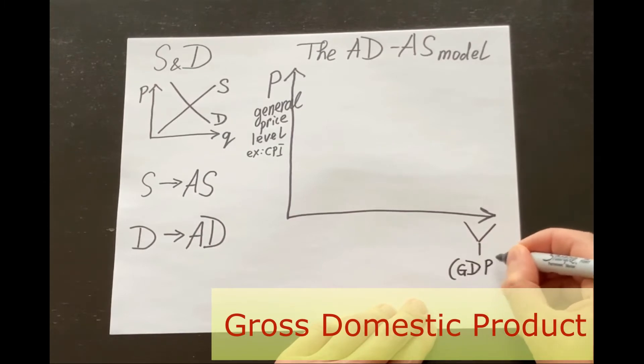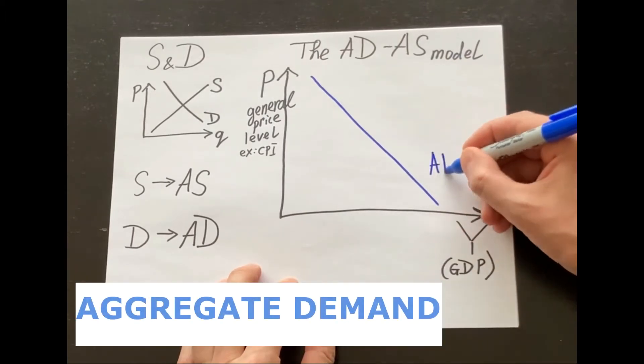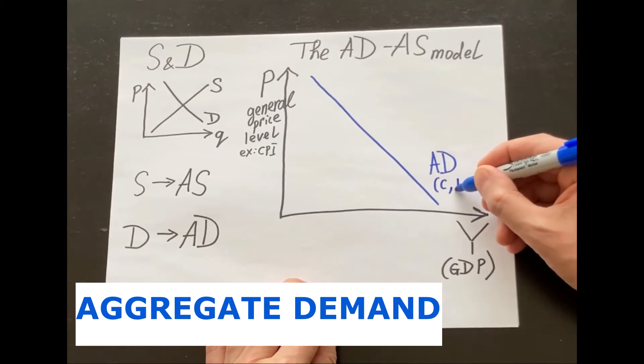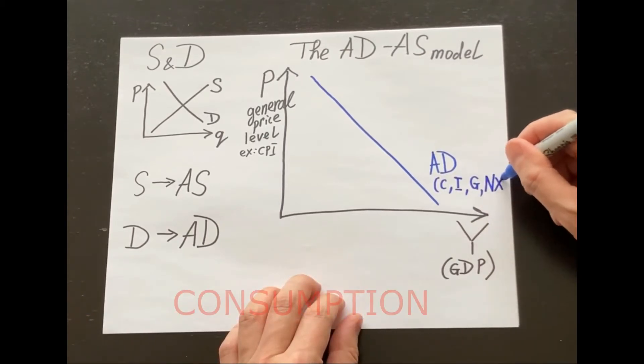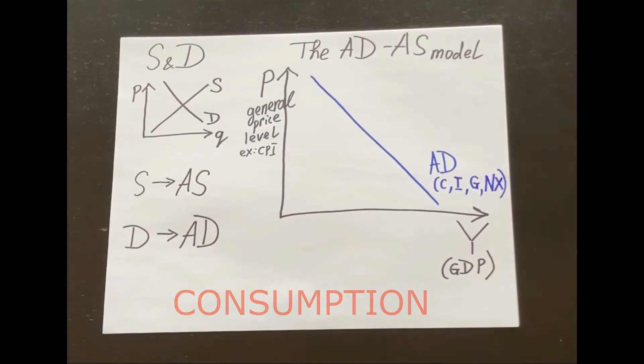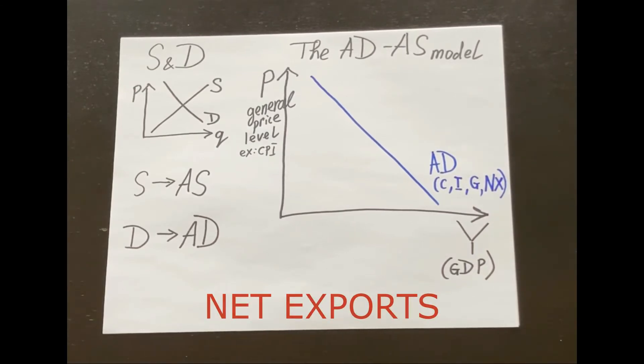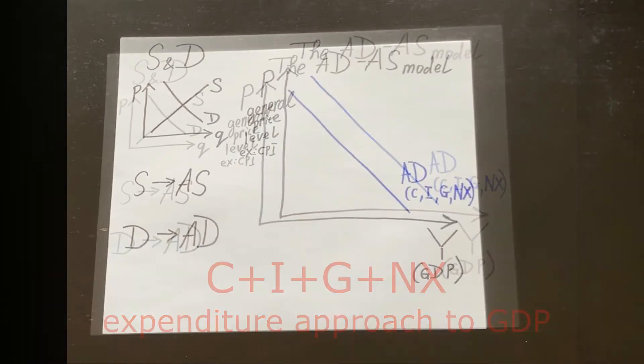The AD curve, the aggregate demand curve shows how many goods and services people, and businesses, and governments, and foreigners buy at each price level. What people buy is called consumption. What businesses buy is called investments. What government buys is government spending, and what foreigners buy is net exports. And C plus I plus G plus NX is the expenditure approach to the GDP.